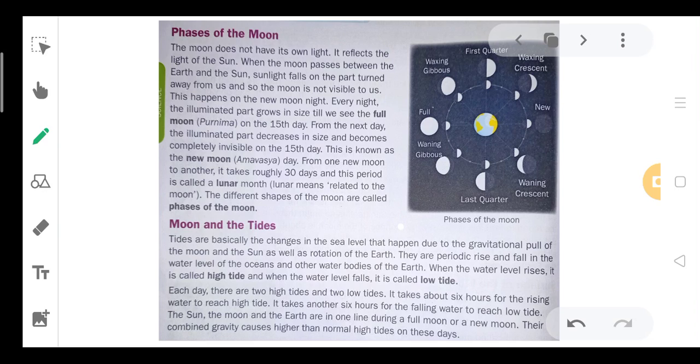This happens on the new moon night. Every night the illuminated part grows in size till we see the full moon, that means purnima, on the fifteenth day. From the next day, the illuminated part decreases in size and becomes completely invisible on the fifteenth day. This is called a new moon. From one new moon to another, it takes completely 30 days, and this period is called a lunar month. The different shapes of the moon are called phases of the moon.